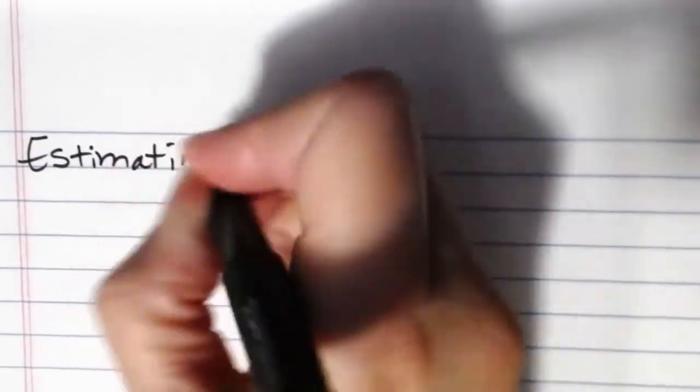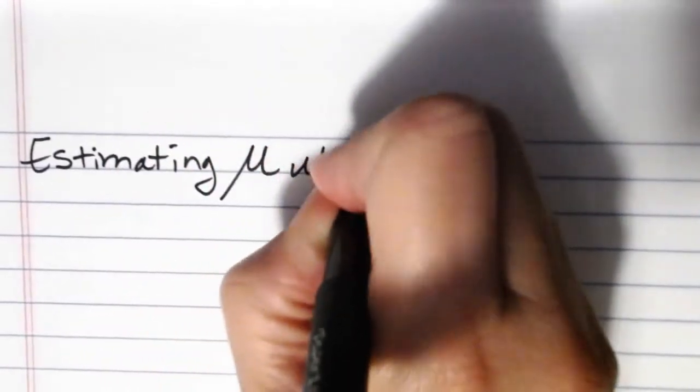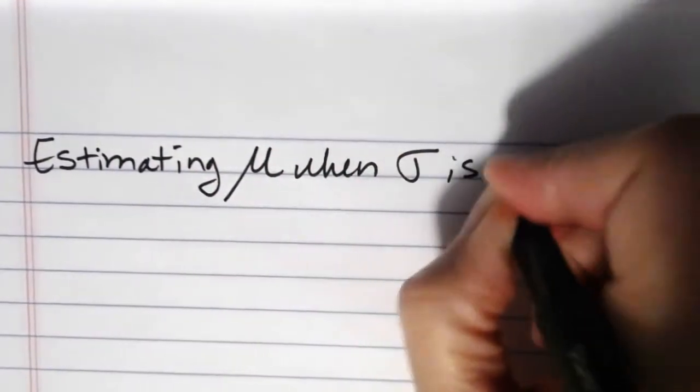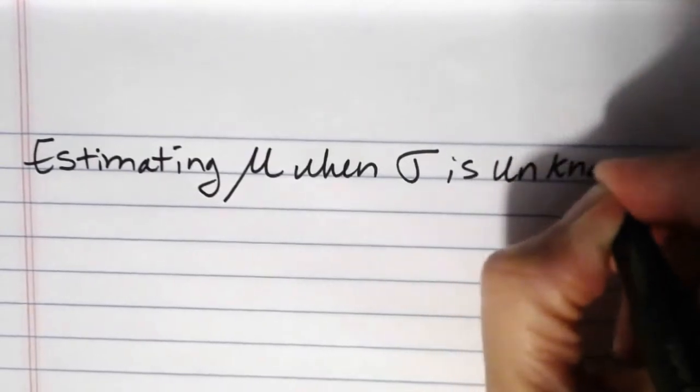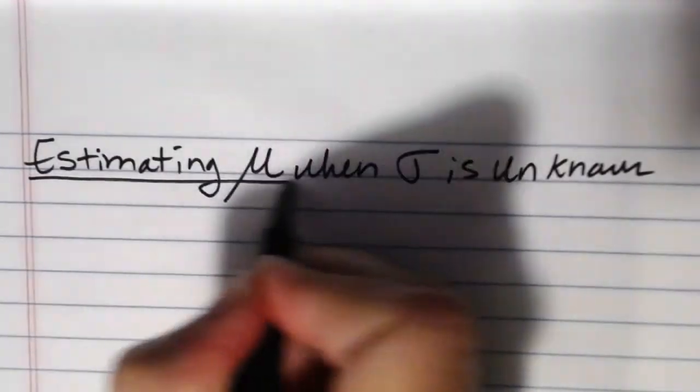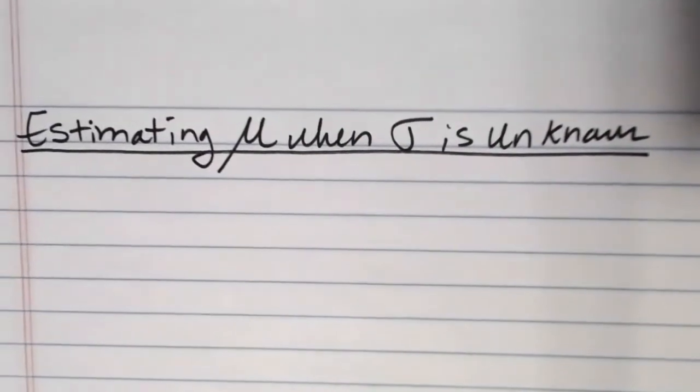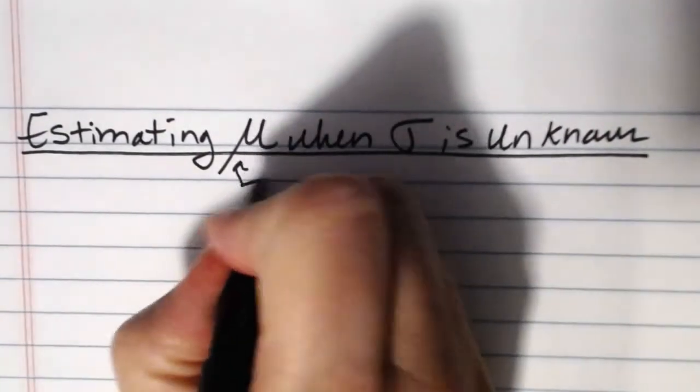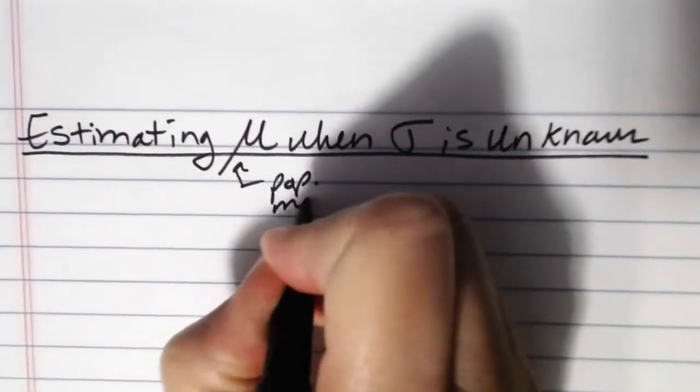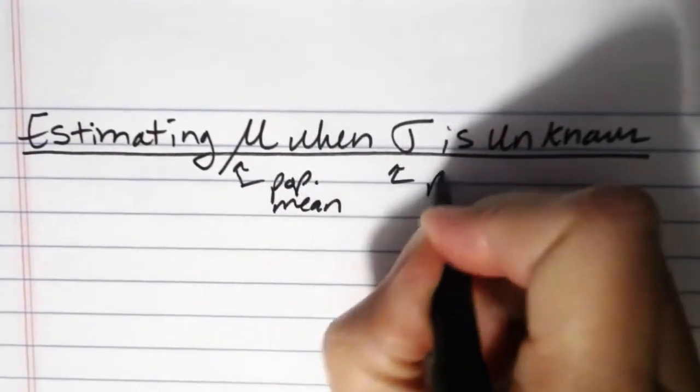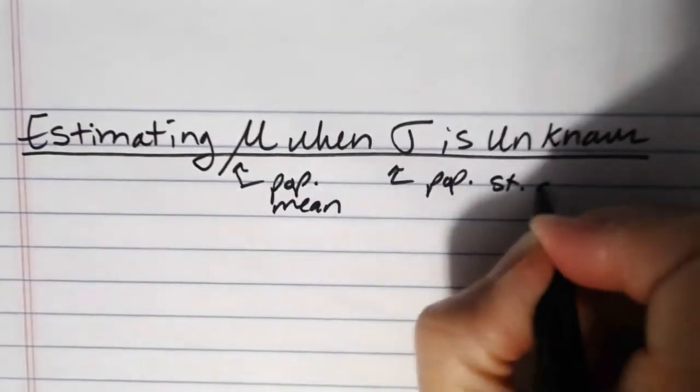In this video we're going to be taking a look at estimating mu when sigma is unknown. So here what we're looking at is we want to estimate the population mean when the population standard deviation is unknown.